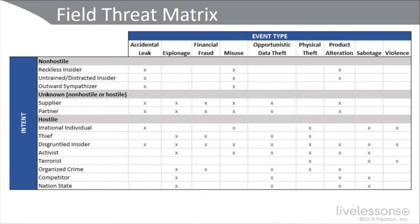Another valuable tool to look at vulnerabilities to operating systems, applications, and data is this field threat matrix from IBM. At the top we have our event type — these are common events or incidents that can happen: accidental leakage, espionage, financial fraud, misuse, opportunistic data theft, physical theft, product alteration, sabotage, and even violence. They categorize these eight or nine event types.